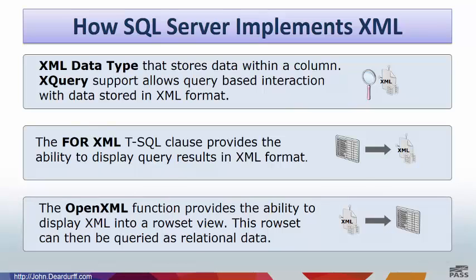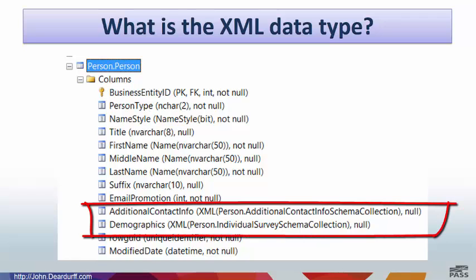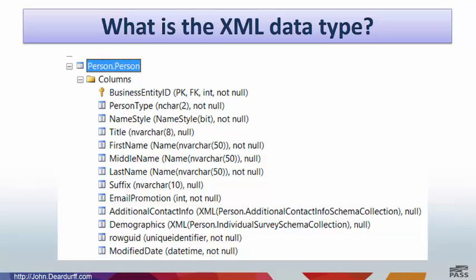I will walk through each one of these implementations and then we will do a demonstration on each. So what is the XML data type? XML data type, just like any other data type, can be used to store data within columns. Here, you can see in the person.person table of the AdventureWorks database, we have two columns that are storing XML information: the additional contact info and the demographics. They are defined as XML columns, and you can also see right next to XML it says person.additional contact info schema collection. Within SQL Server, you can attach XSD, or schema definition sheets, to define what tags can actually be used within an XML column.